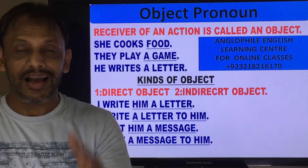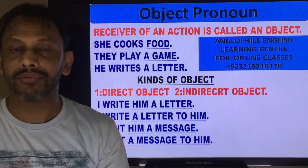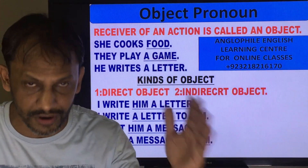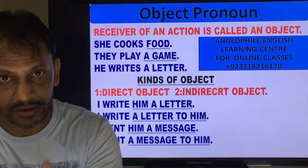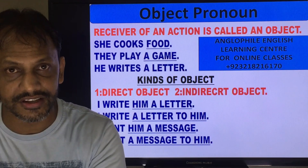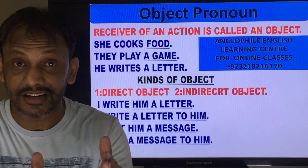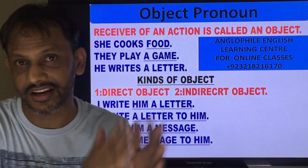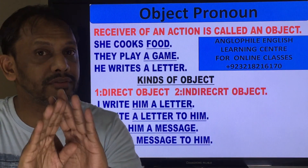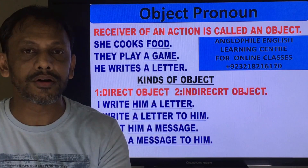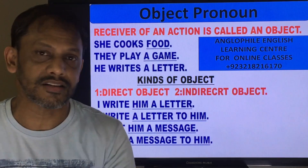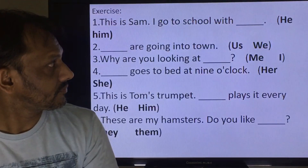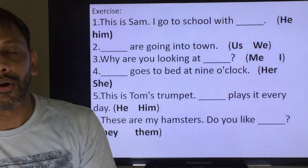So we have learned about subject — doer of an action; verb — shows an action or state; and object — receiver of an action. We have learned it in detail. Now I am going to give you some exercises. Please do them.